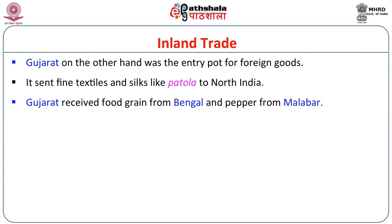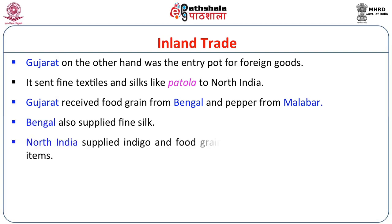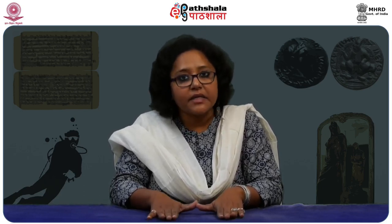From accounts of travelers during this time, we have a vivid description of the items sent from Gujarat and received in its ports. Bengal was supplied fine silk. North India supplied indigo, food grain, and had a great market for luxury goods. The time was thus congenial for the expansion of market. The network of roads improved, and people had the capacity — at least the upper echelon of society — to buy items and exchange goods.